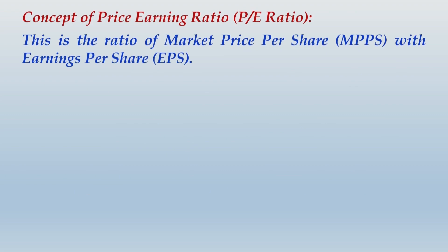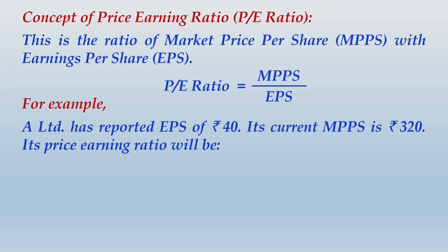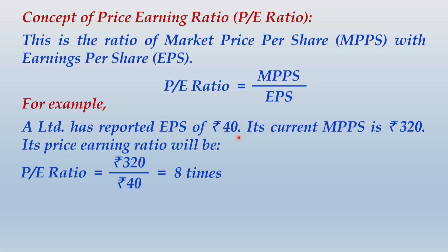The price-earning ratio is simply market price per share divided by EPS. For example, A Limited has reported an EPS of rupees 40 and its current market price per share is rupees 320. Its PE ratio will be 320 divided by 40, which equals 8 times. In this scenario, the current market price is compared with the current EPS — different from the earlier example where current market price was compared with expected EPS.